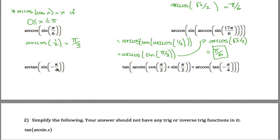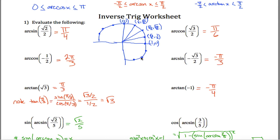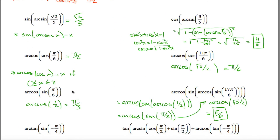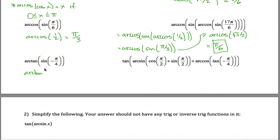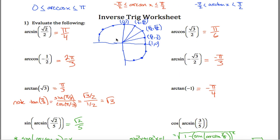The arc tangent of the sine of negative pi over 4. First, what's the sine of negative pi over 4? Negative pi over 4 is this point right here and the sine of that is negative root 2 over 2, because the y coordinate there is negative root 2 over 2. Actually, let me change this to arc cosine instead. Arc cosine of negative root 2 over 2 is asking me: what angle between 0 and pi, when I take the cosine of it, will I get negative root 2 over 2? Here's where the x coordinate is negative root 2 over 2, and this happens at 3 pi over 4.